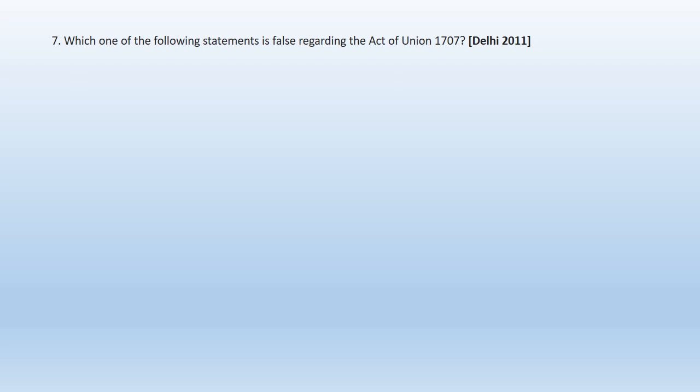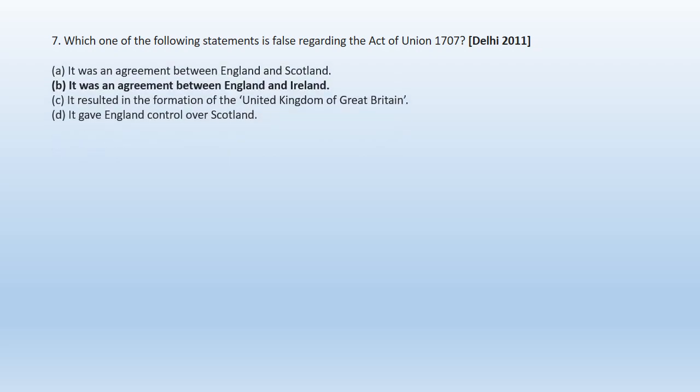Question 7: Which one of the following statements is false regarding the Act of Union 1707? A. It was an agreement between England and Scotland, B. It was an agreement between England and Ireland, C. It resulted in the formation of United Kingdom of Great Britain, D. It gave England control over Scotland. Option D is the false statement regarding the Act of Union 1707.